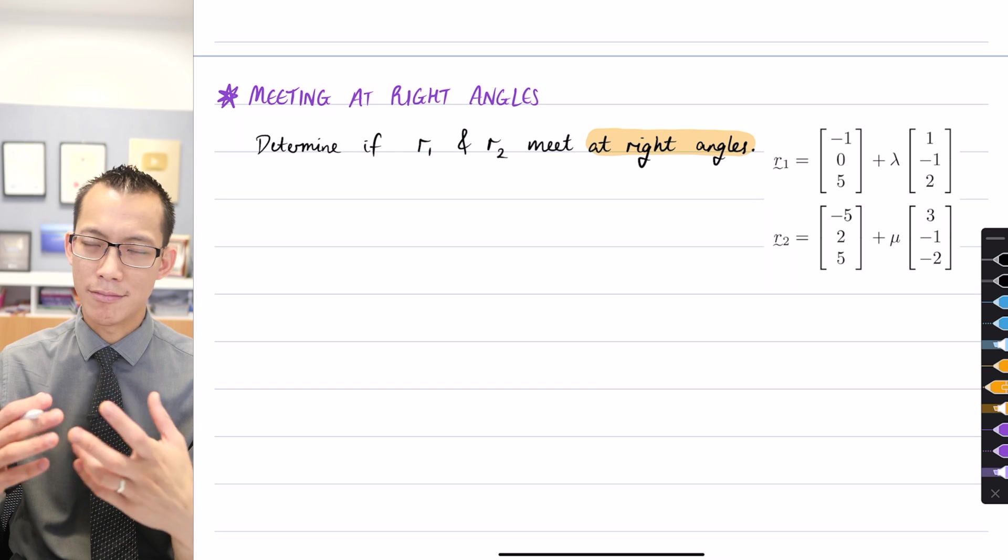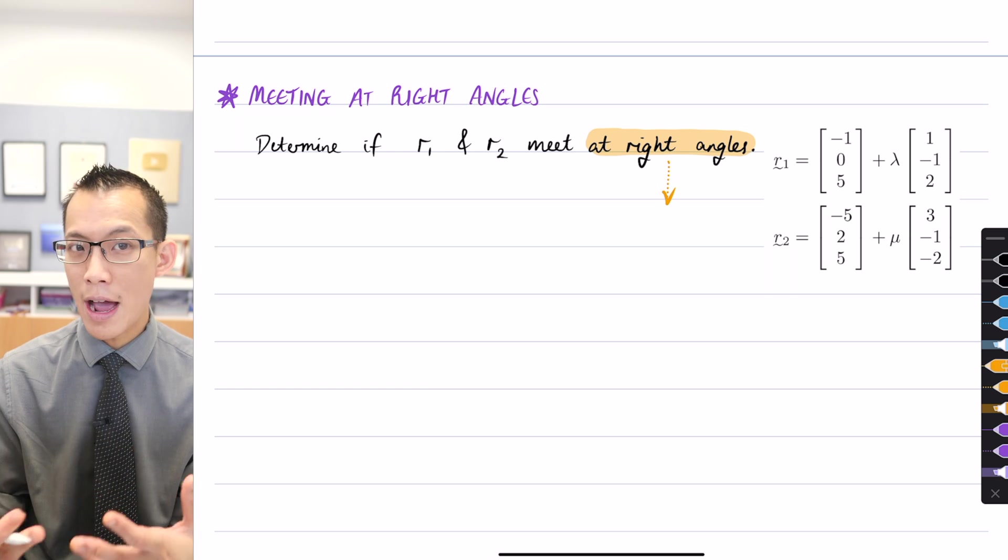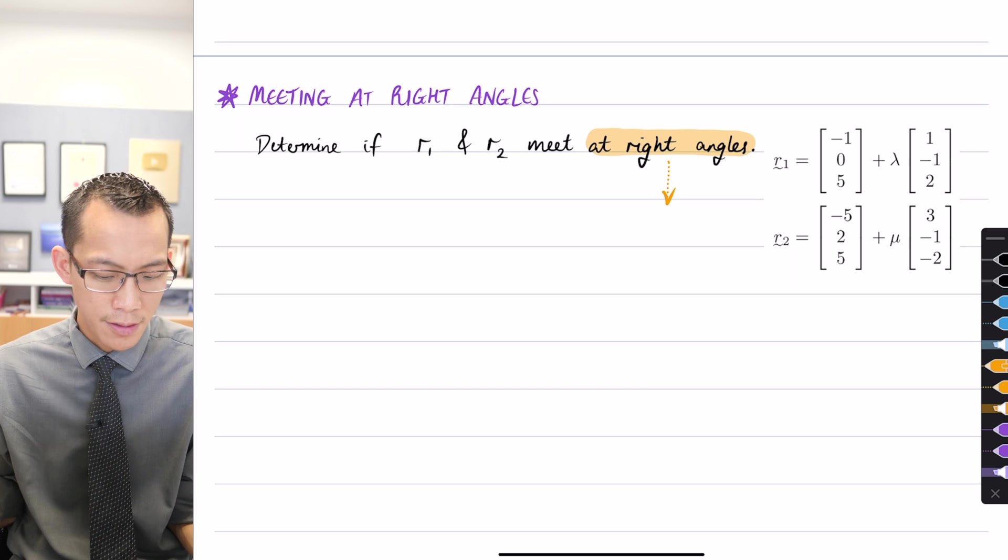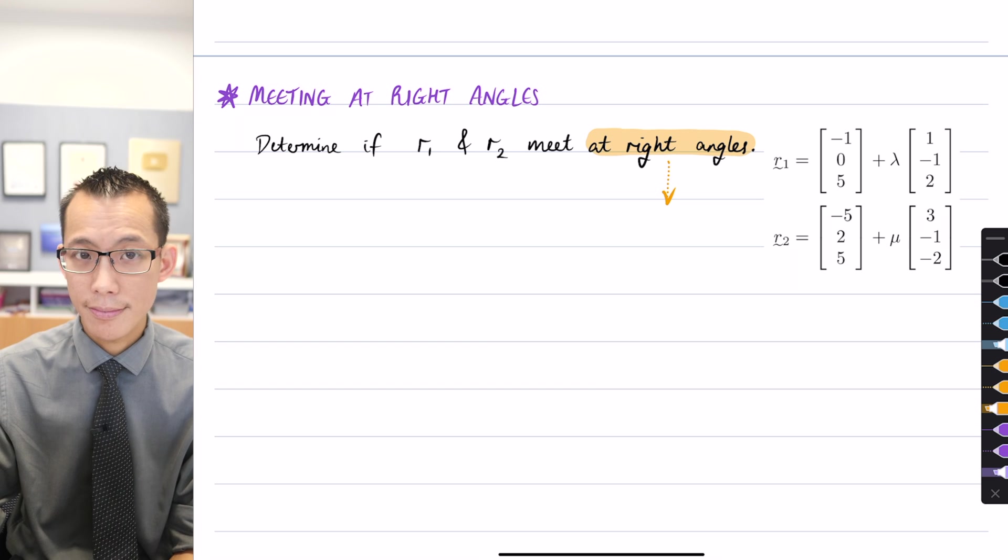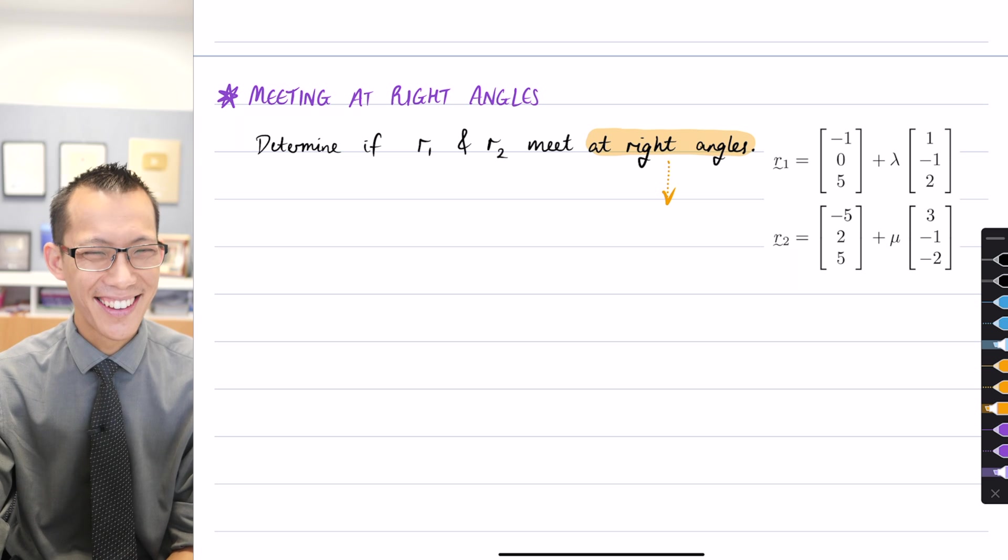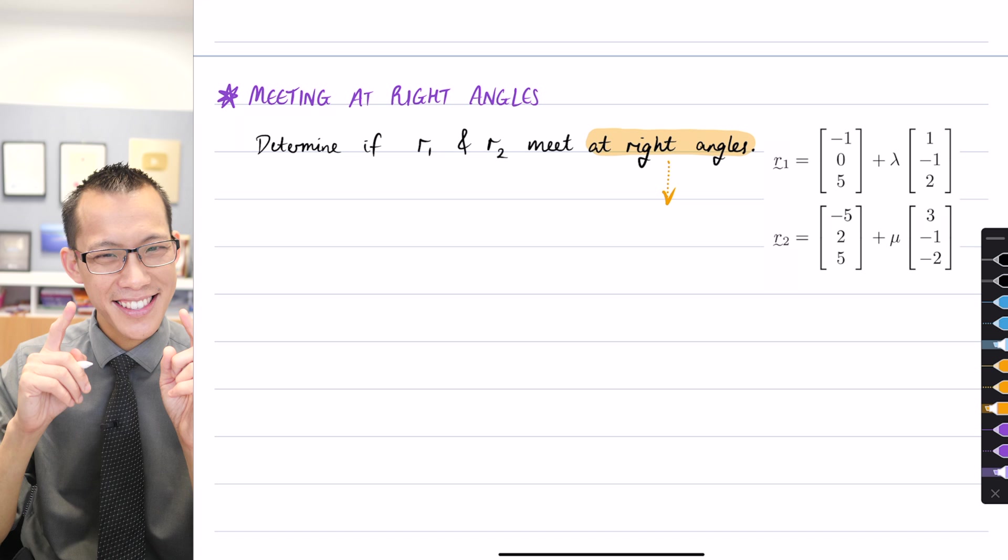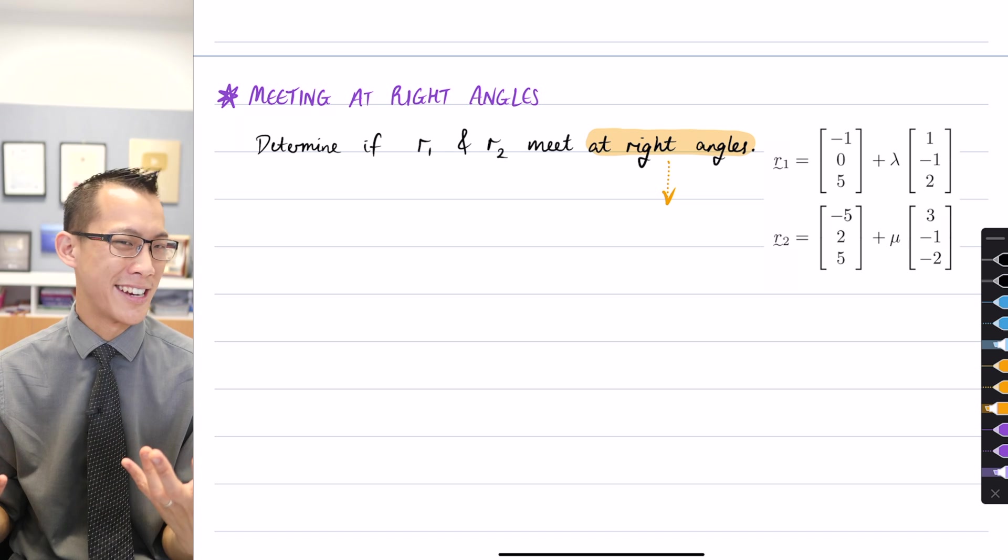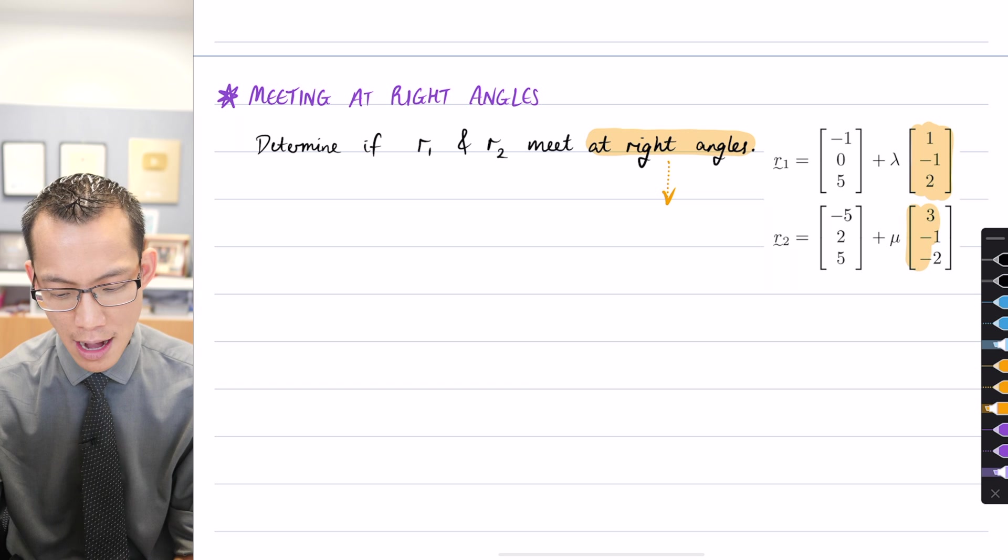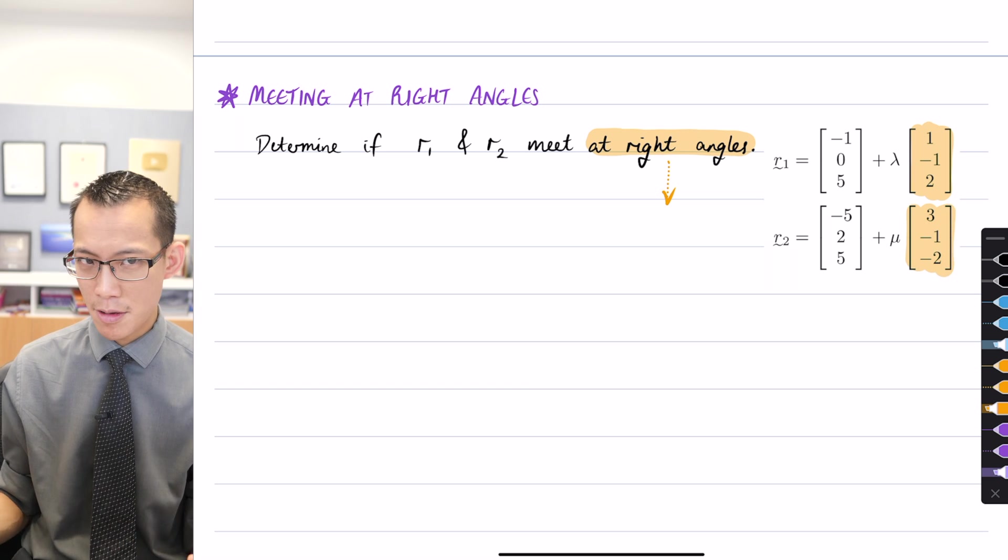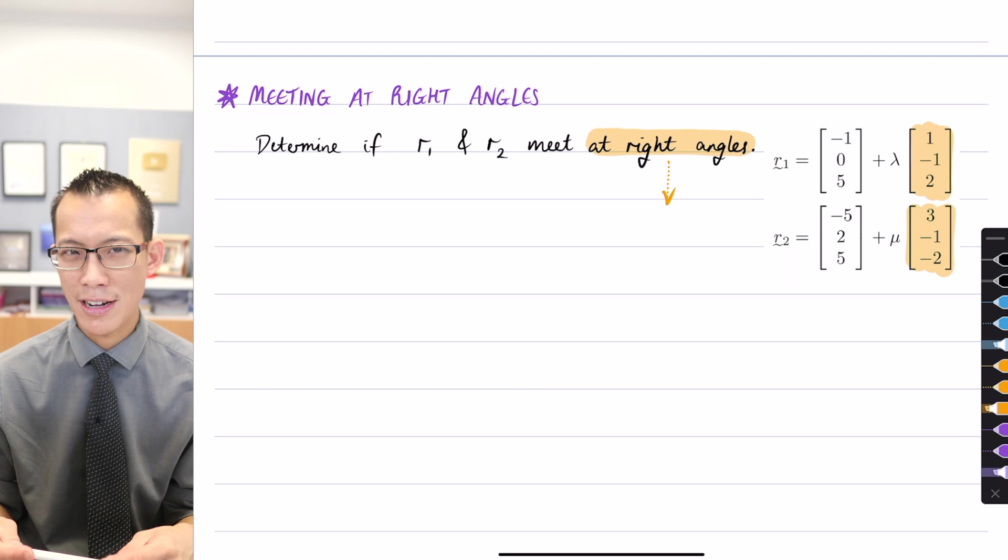In a similar way there's something we do for this question to work out whether two vectors are at right angles to each other, whether they're orthogonal. We're not going to use gradients because we don't have a gradient. What do we have? The direction vector is equivalent to gradient in this context. So you can see the direction vectors over here on the right hand side. If they are at right angles, how should the direction vectors be related?